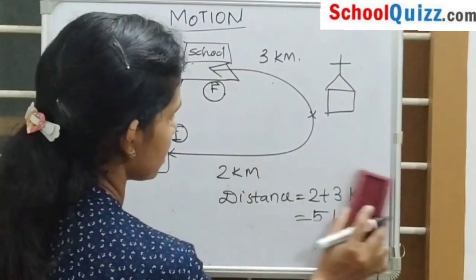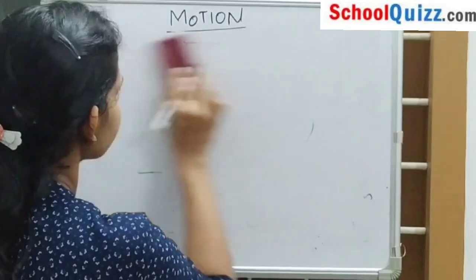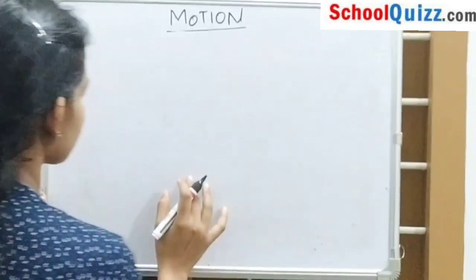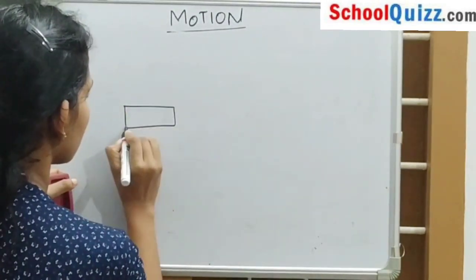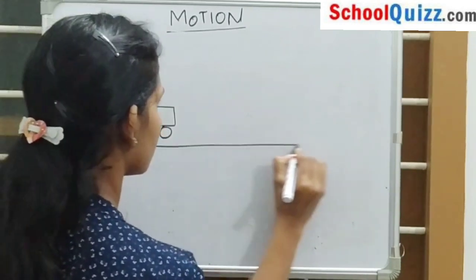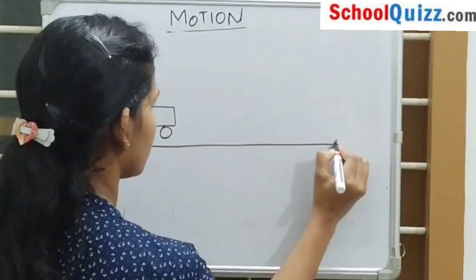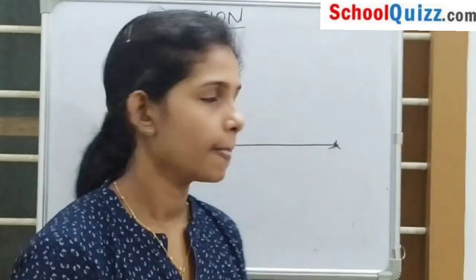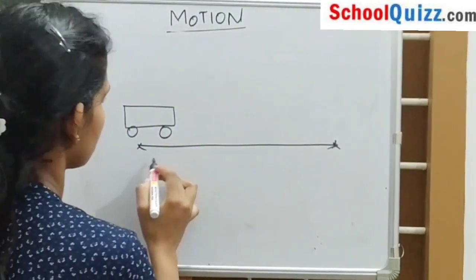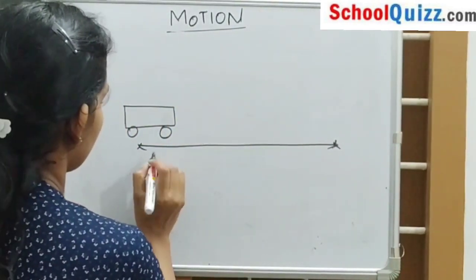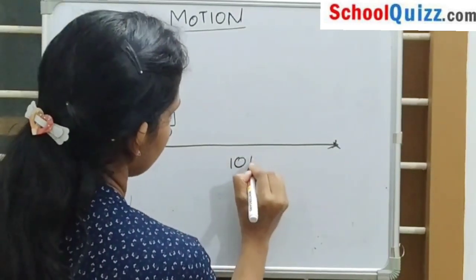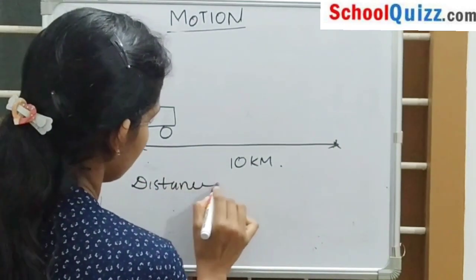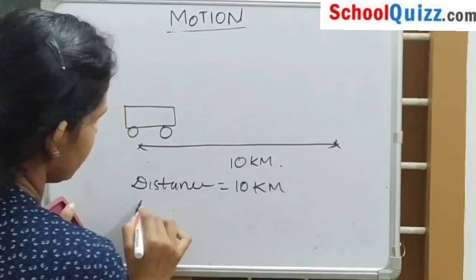Consider another example. If a car moves in a straight line, we can see that distance and displacement are equal. So here distance is equal to 10 kilometers, and displacement is also 10 kilometers.